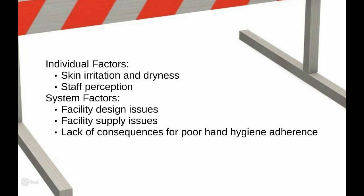Individual perception issues include believing there is a low risk of acquiring infection from patients or disagreement with hand washing requirements. System factors that negatively impact hand hygiene compliance include facility design issues, such as lack of sinks or sinks that are inconveniently located, and facility supply issues such as lack of soap and paper towels. Additionally, not having consequences for not performing hand hygiene contributes to poor adherence.